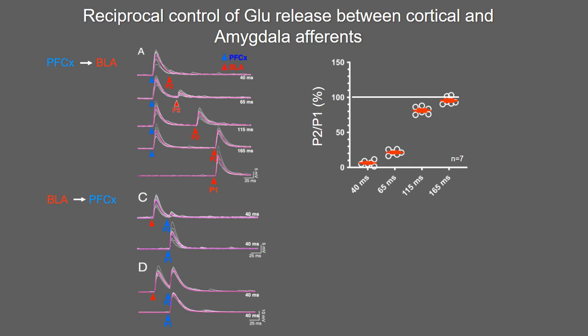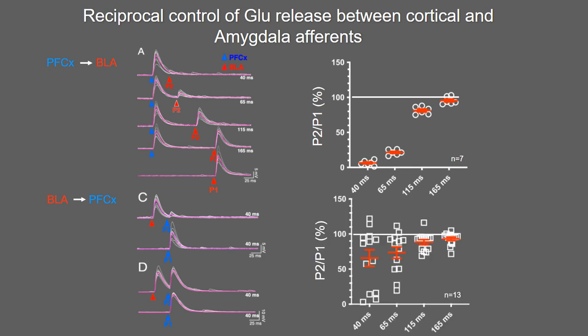When we reverse the stimulation order — stimulating the BLA first, followed by the PFC — in some cells (panel C), stimulating the BLA prior to cortical input with a 40 ms interval again almost totally inhibits cortical synaptic transmission. However, in other cells (panel D), this inhibition is very weak. At 40 milliseconds, there is great cell-to-cell variability: in some cells BLA stimulation totally inhibits cortical pathway transmission, while in others it fails entirely.